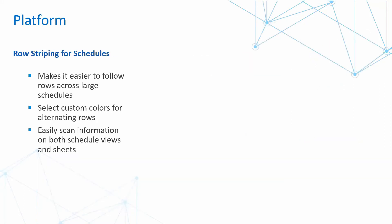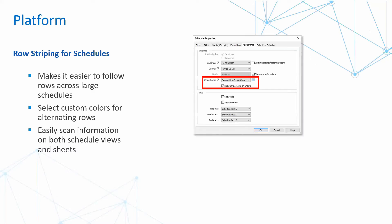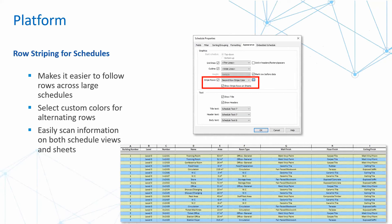When it comes to schedules, a big change is the ability to make it easier to follow rows across a schedule using row stripping. In your schedule properties under Appearance, you can select and activate striped rows and choose a color for those rows. It makes schedules 10 times easier to follow, navigate, and read — it's also easier on the eyes and makes working in Revit much more pleasant.